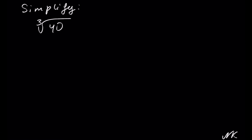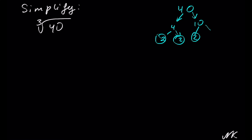In this example we have to simplify cube root of 40. We need to rewrite 40 in terms of a cube root, so we factor 40 and see if we have 3 matching factors. Let's rewrite 40 as 4 times 10. Then 4 is 2 times 2, and 10 is 2 times 5. So we have 2 times 2 times 2 times 5.